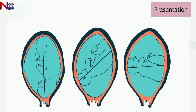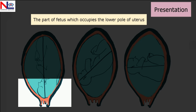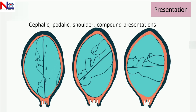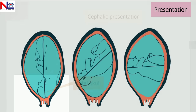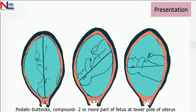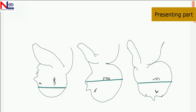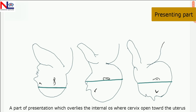Presentation means the part of the fetus occupying the lower pole of the uterus, consisting of cephalic, podalic, shoulder, and compound presentations. In cephalic presentation, the fetal skull occupies the lower pole. In podalic presentation, the buttocks occupy the lower pole. In compound presentation, two or more regions of the fetus overlie the internal os. The presenting part is defined as the part of the presentation which overlies the internal os. In cephalic presentation there are three presenting parts: vertex, brow, and face — completely dependent on the degree of flexion.